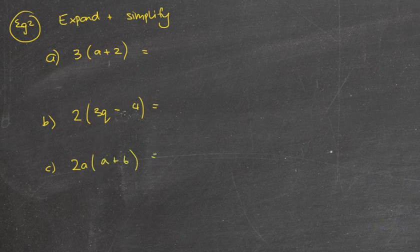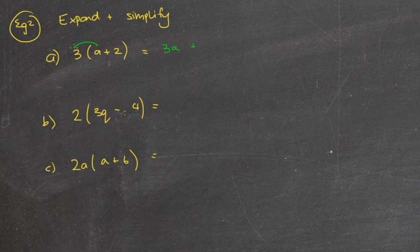So let's do these three together. So for the first one, let's do our rainbow. We're doing 3 lots of a plus 2. So 3 lots of a, which is 3 times a, which is 3a, plus 3 lots of 2, which is 3 times 2 is 6.